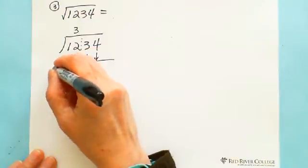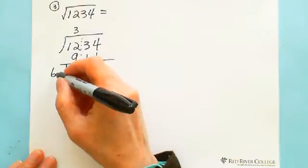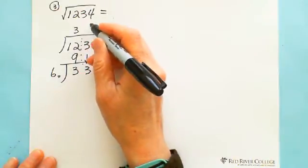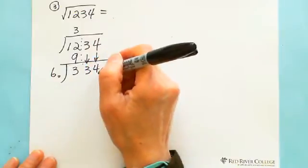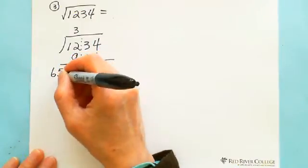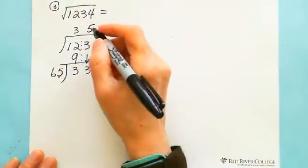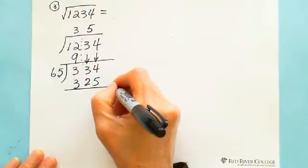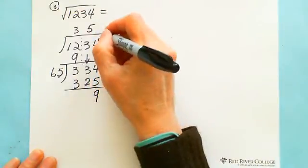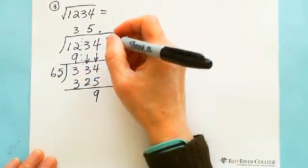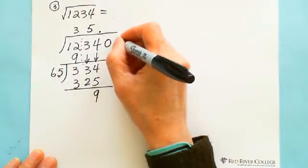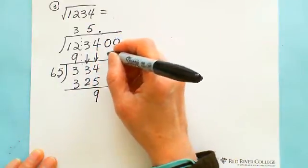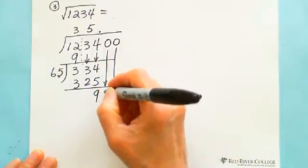Then double this number, which is 6, and estimate the next digit. If you multiply 5: 5 times 65 — if you try 6, 6 times 6 is 36, too big. That's why this digit is 5. So the second digit is 5. And 5 times 5 is 25. 5 times 6 is 30, carry 3 — gives 32. Then you have a remainder of 9. Put the decimal point here and add two zeros.